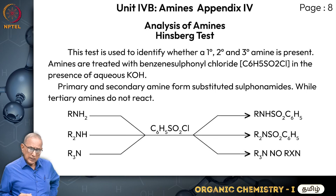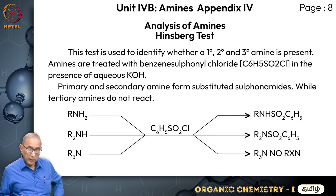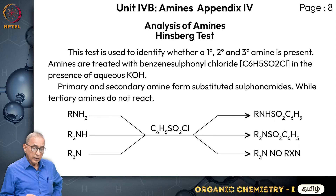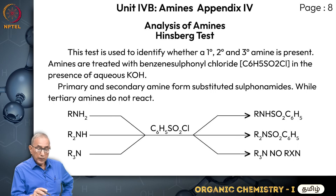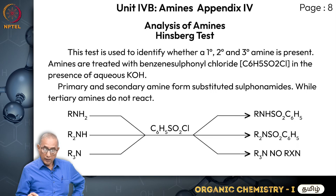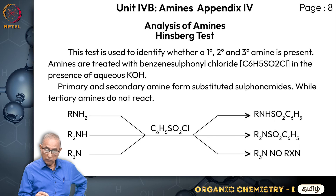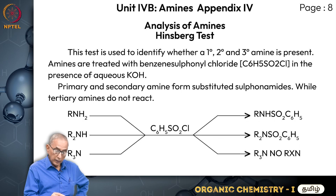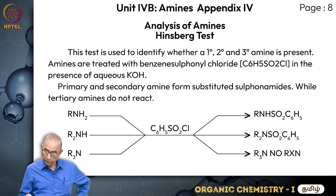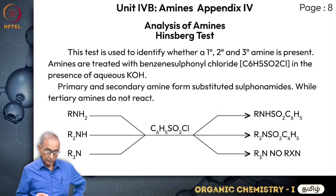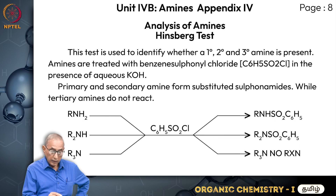Appendix 4 covers analysis of amines, especially the Hinsberg test. The test is used to identify whether a given amine is a primary, secondary, or tertiary amine. The amines are treated with benzene sulfonyl chloride in the presence of aqueous potassium hydroxide. Primary and secondary amines form substituted sulfonamides - RNH2 plus C6H5SO2Cl forms RNHSO2C6H5, where one nitrogen hydrogen has been replaced by the C6H5SO2 group.